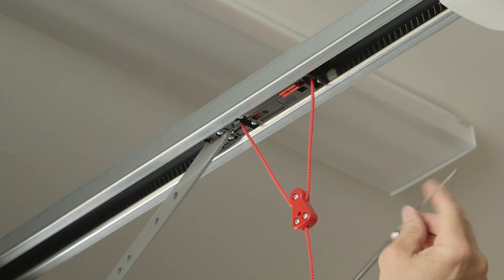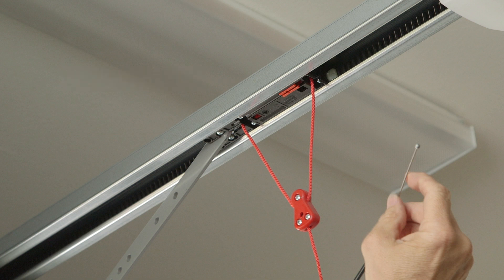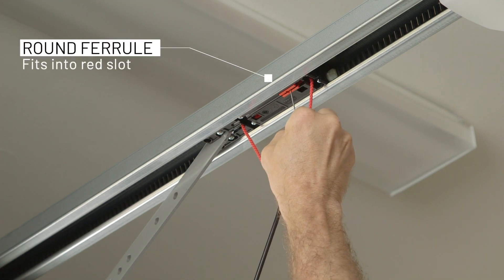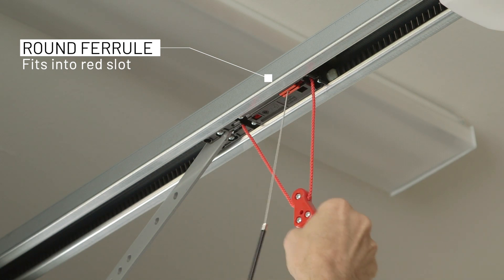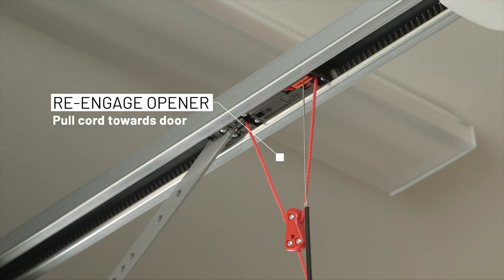The vault lock adapter kit is a 15 to 20 inch long cable. On one end is a round sphere shaped ferrule. The round shaped ferrule fits right inside that slot in the carriage and then you re-engage the garage door opener by pulling the cord towards the door.